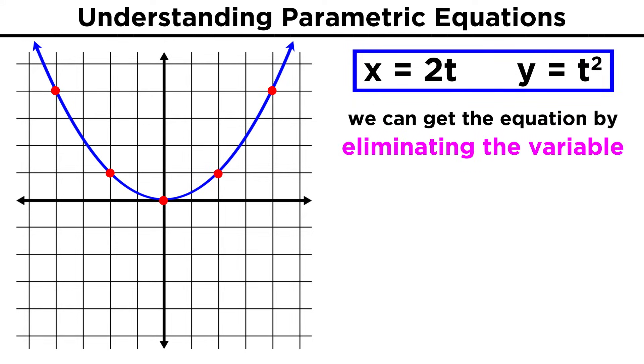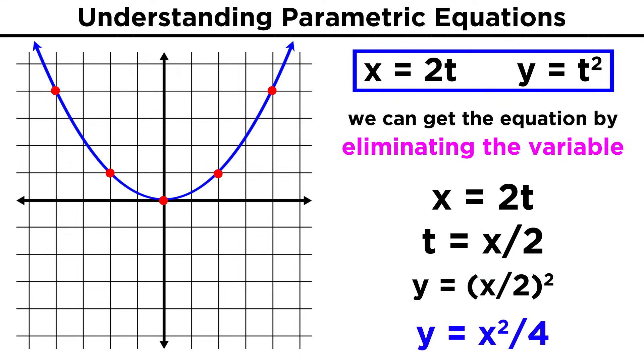We can quite easily get the equation for this parabola by doing something called eliminating the variable. This is where we solve for t in one of the equations and plug it into the other. Using this one, t must be equal to X over 2, so let's plug X over 2 into the other equation, and we get Y equals X squared over 4, or one fourth X squared.